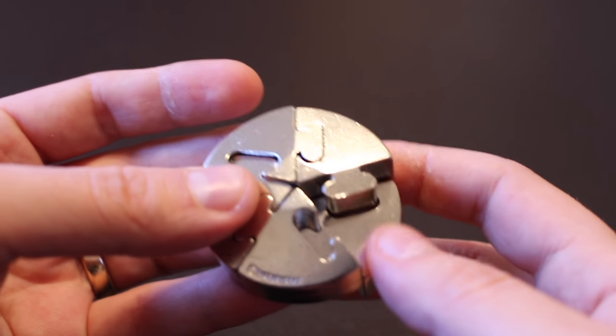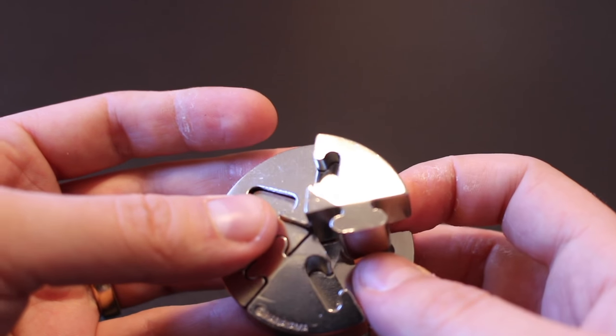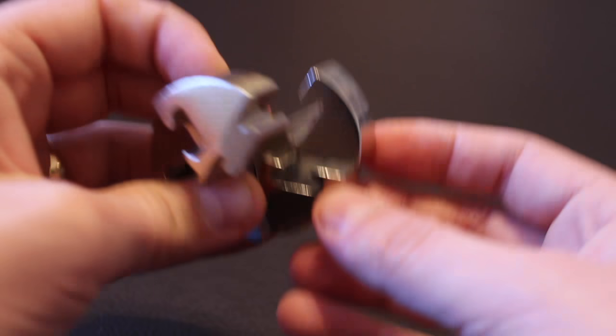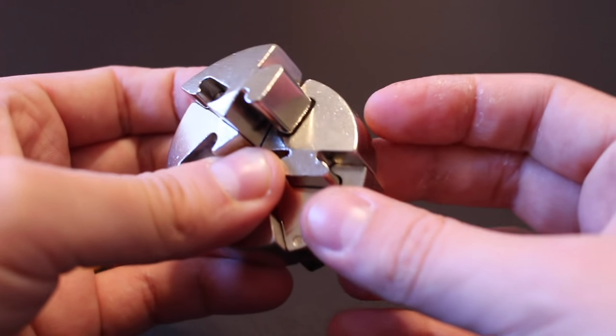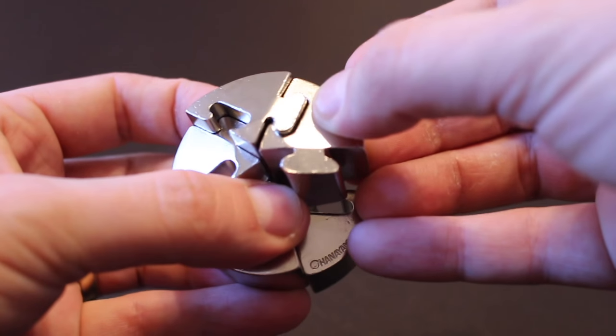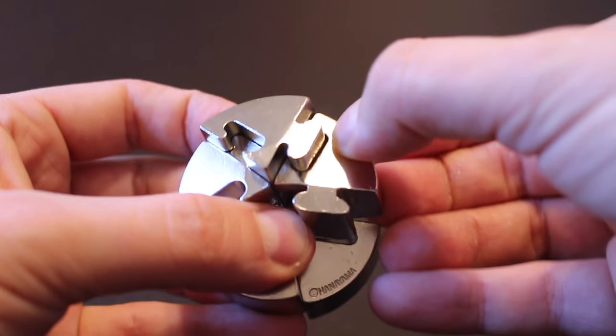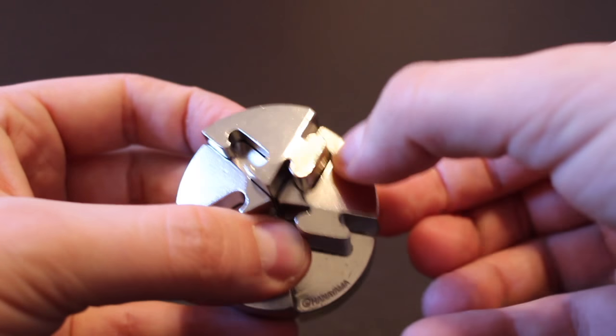The way that this works is that there's one particular position in which you can take pieces off. So let's just take a look at this from the perspective of one piece. What I think we want to be doing here is doing something where we twist it and take it off.